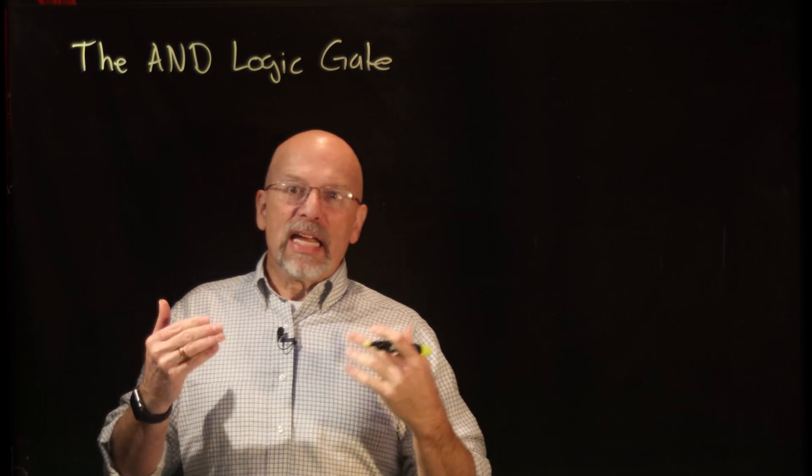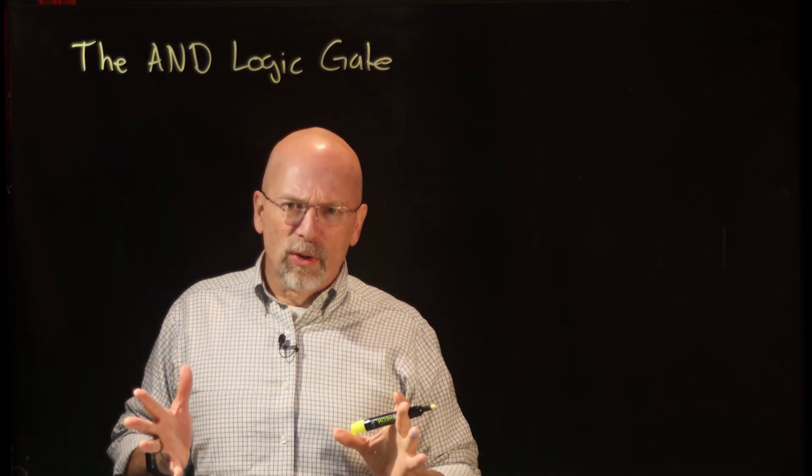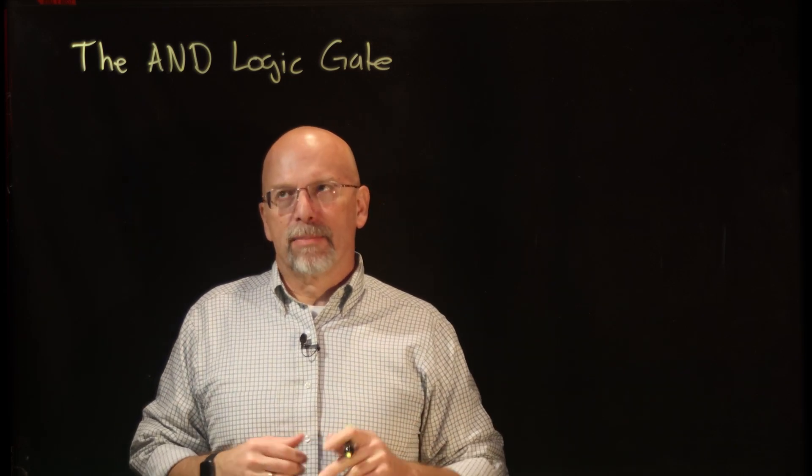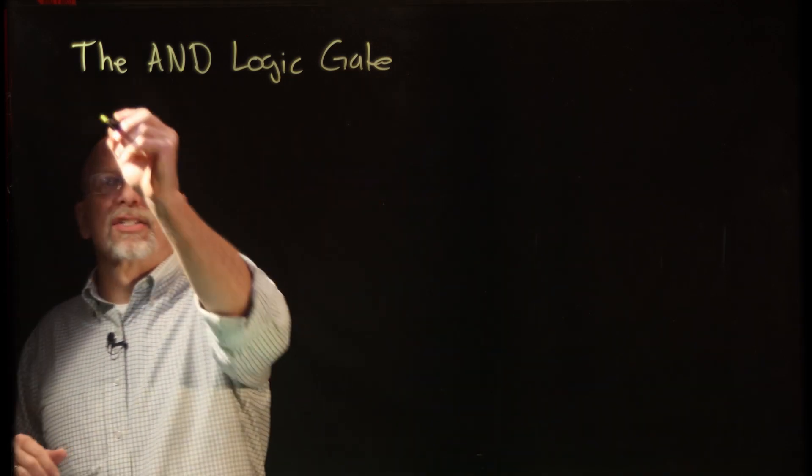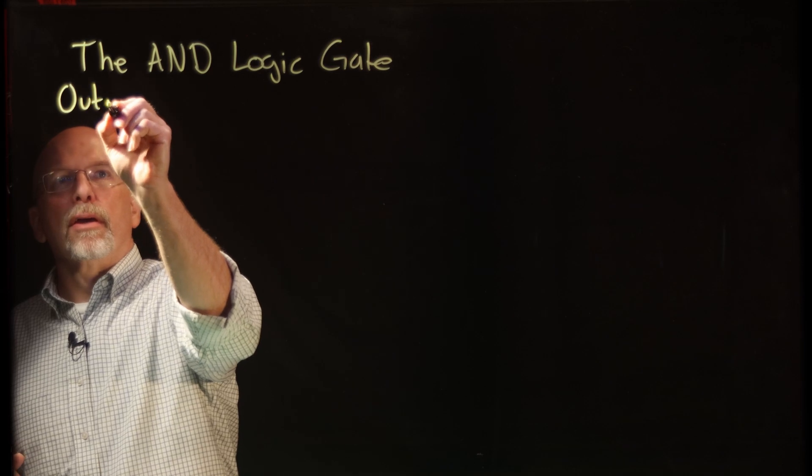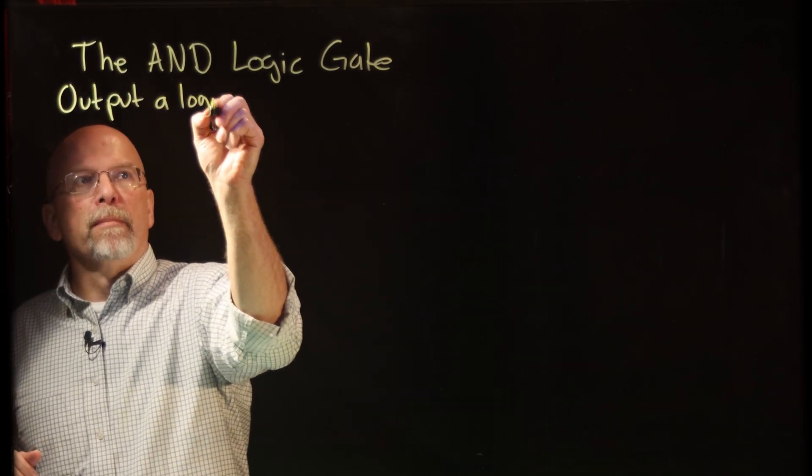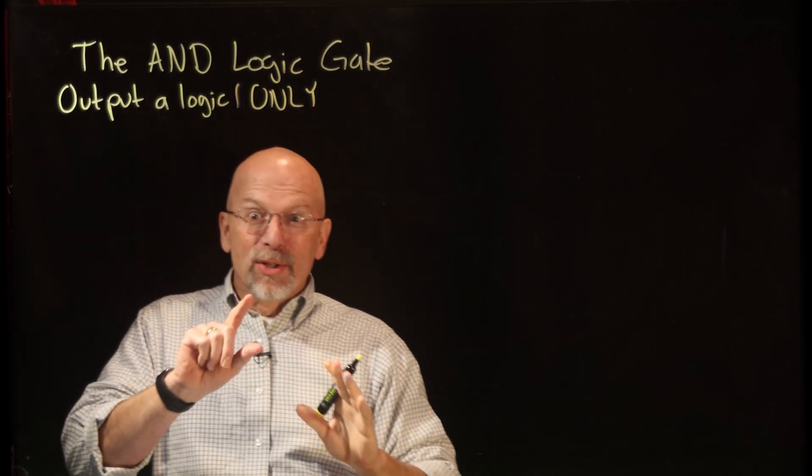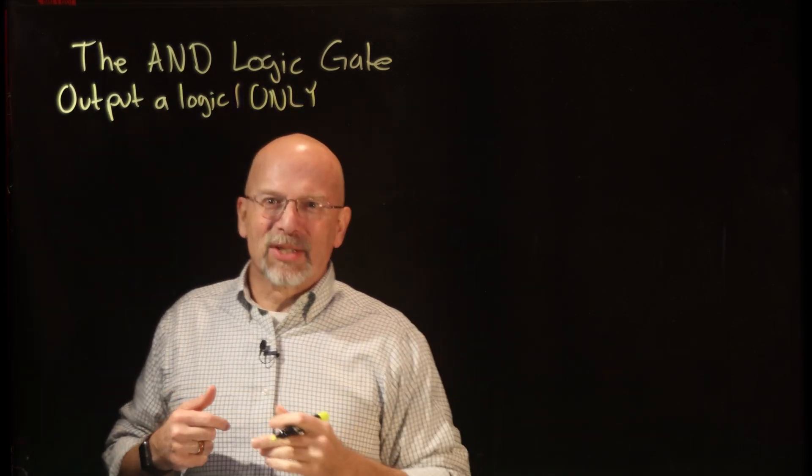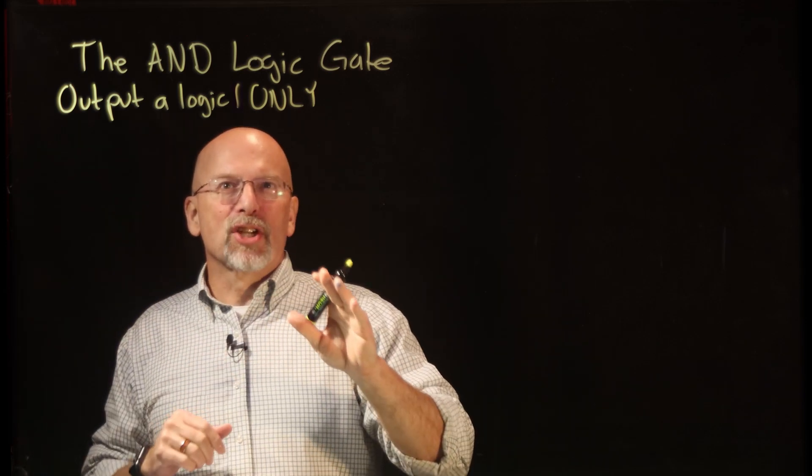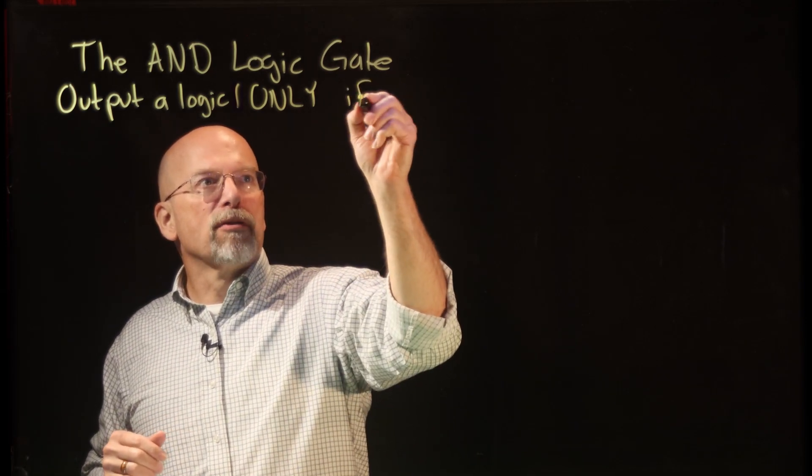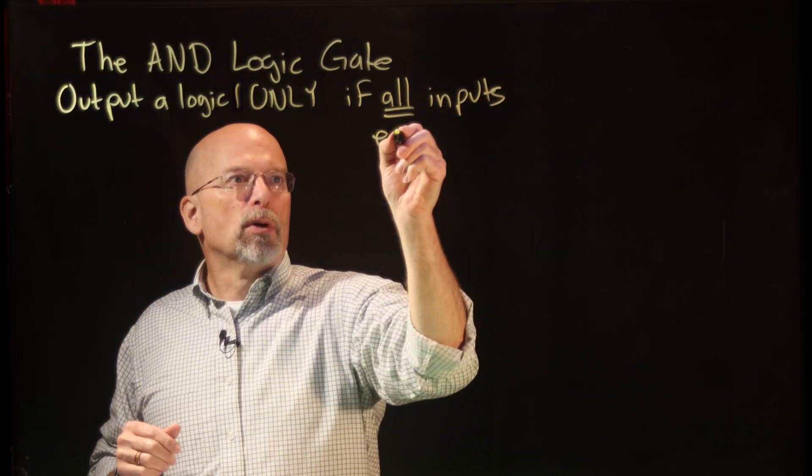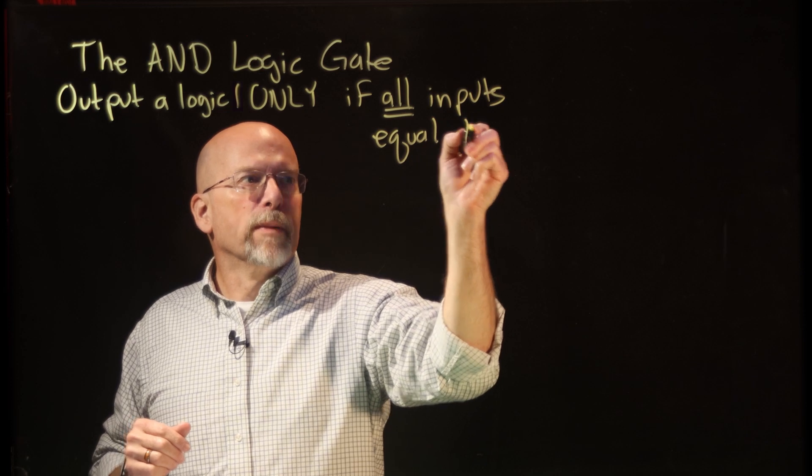Now the AND logic gate has a very specific algorithm that it follows to generate a single output X based on its inputs. The algorithm is this: output a logic 1 only - and in math we do the if and only if - so output a logic 1 only if all inputs equal 1, equal a logic 1.